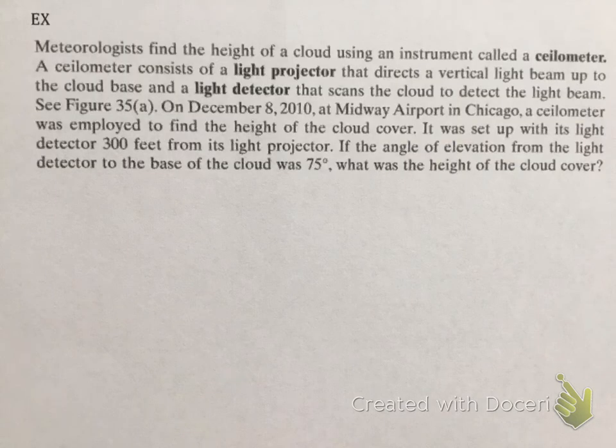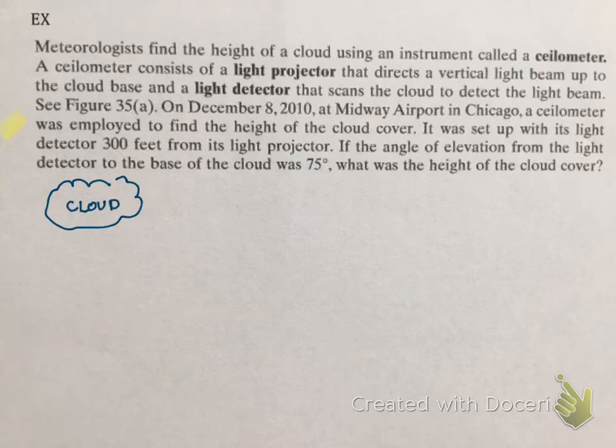Let's try one of the application problems. Meteorologists find the height of a cloud using an instrument called a ceilometer. A ceilometer consists of a light projector that directs a vertical light beam up to the cloud base. So basically what that looks like is, we have a cloud, and then we have a light detector going right to the base of that cloud. So here's the base of the cloud, and the light projector, and I'll make that as an LP, for light projector, is going to be causing a line straight up to the cloud base. Now, they also have a light detector that scans the cloud to detect the light beam.